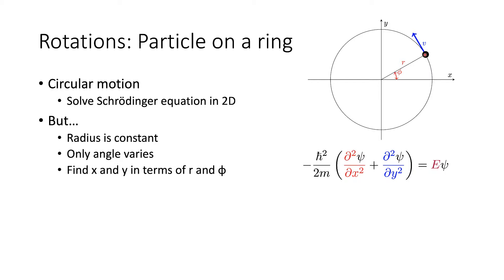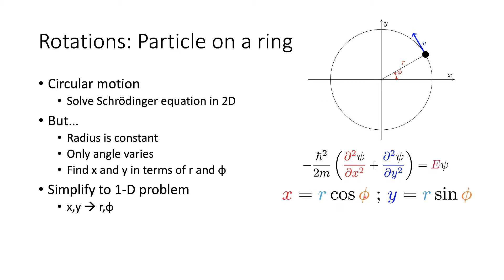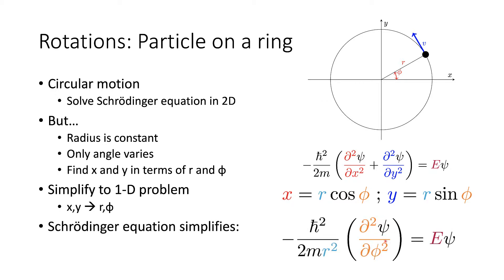The radius is constant and only the angle is varying, so we can find x and y in terms of the radius and the angle. The radius creates a right-angled triangle with the x-coordinate and the y-coordinate, allowing us to calculate x and y in terms of r and phi. This allows us to simplify to a one-dimensional problem: r is a constant and phi is the only variable. In effect, this is a pseudo one-dimensional problem — we're rotating in two dimensions, but the only variable we need to consider is phi, the angle of rotation.